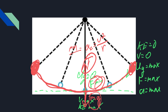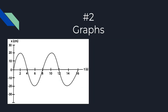Question number two covers simple harmonic motion graphs. There are several graphs they might give you, but I'll focus on the x-t graph, which you'll most likely see. The main thing they'll ask you to find is the period — just look at when the pattern repeats itself. In this example, it repeats at eight seconds, so the period is eight seconds. They may also ask for the frequency, which is one over the period: one-eighth hertz.